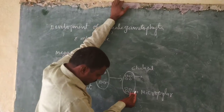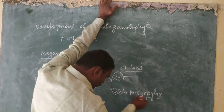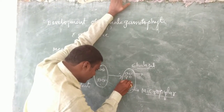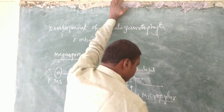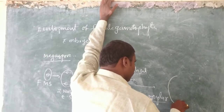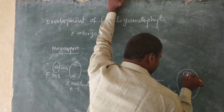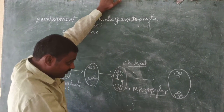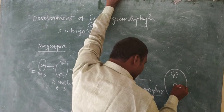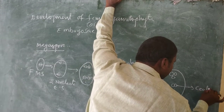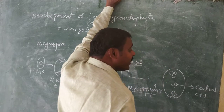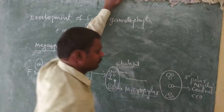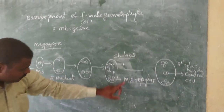From each pole, one nucleate moves towards the center — one from the chalazal end and one from the micropylar end — and they fuse at the center. As a result, they form a central cell, also called secondary polar nuclei. Up to completion of all these processes, there is no cytokinesis.